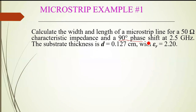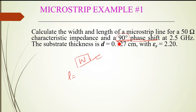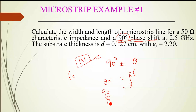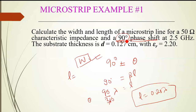Length calculation is based on the required phase shift. For a 90-degree phase shift, beta times L equals 90 degrees, so L equals 90 degrees divided by beta. Since beta equals 2-pi divided by lambda, this gives L equals 0.25 lambda. So a 90-degree phase shift corresponds to a quarter wavelength. Lambda can be calculated as v_p divided by frequency.